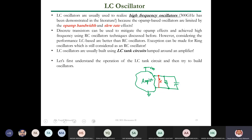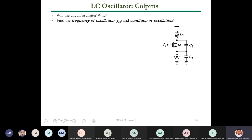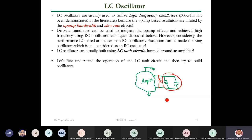We'll talk about the LC oscillator with two famous oscillators: the Colpitts and the Hartley. The resonance frequency of the LC circuit is one over square root of LC — exactly one over √(LC).